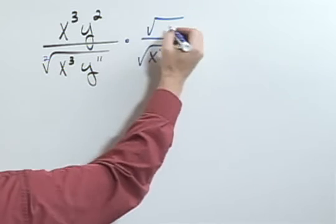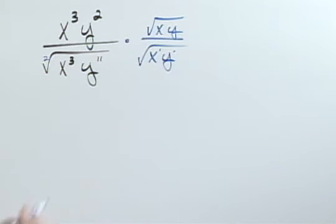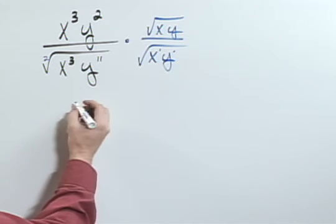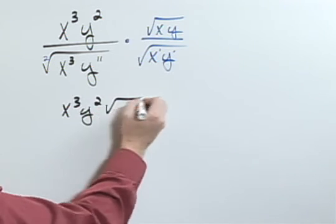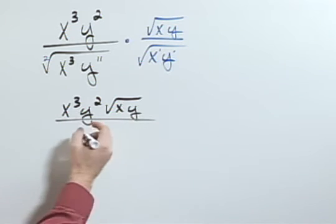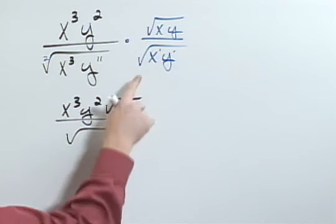Well if I do the denominator I have to do the numerator. So now on top I would have x cubed y squared times the square root of x y, and on bottom I would have the square root of x to the fourth y to the twelfth.